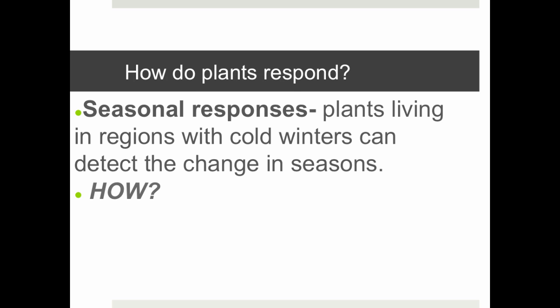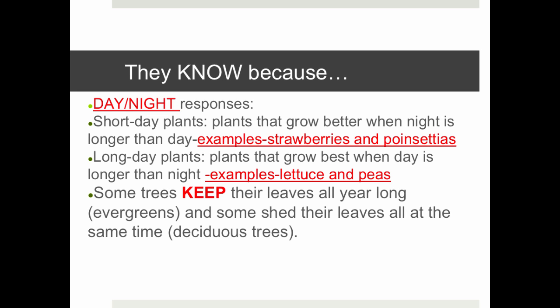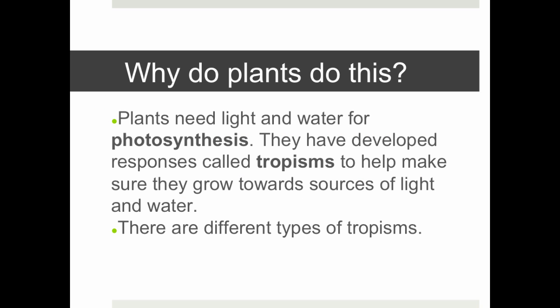So how do plants respond? There are seasonal responses. Plants living in regions with cold winters can detect the change in seasons through day and night length. Days get longer in summer and shorter in winter. Short day plants actually grow better when the night is longer than the day — examples are strawberries and poinsettias. Long day plants grow better when the day is longer than the night — examples are lettuce and peas. Some trees keep their leaves all year and are called evergreens. Others, like where we live, shed their leaves seasonally — those are deciduous trees.